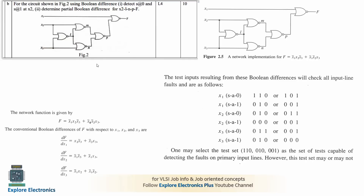The next part is a problem: for the circuit shown, using Boolean difference, detect stuck-at 0 and stuck-at 1 at node x2, and determine the partial Boolean difference for the path x2 → L → N → P → F. First, we find the network function — the Boolean expression for the given circuit — and then find the conventional Boolean difference of output F with respect to the inputs.